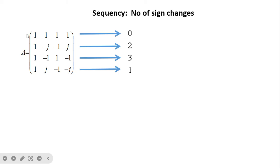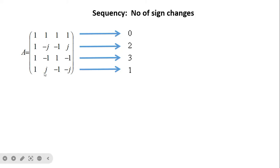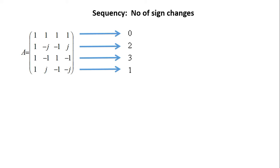Looking at the DFT matrix rows: the first row has no sign changes, so it extracts the low-frequency component from the image. The second row alternates 1, −1, 1, −1 with continuous sign changes, extracting the high-frequency component. The third row is positive then negative, extracting components with more low-frequency and less high-frequency content. The fourth row has two sign changes, extracting components with somewhat higher frequency content.